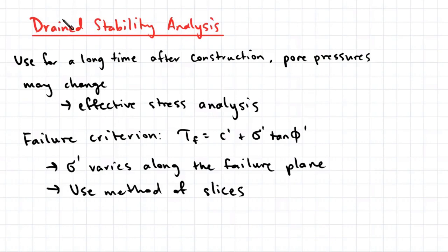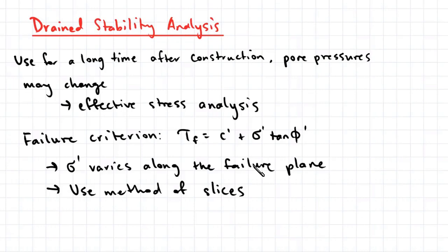Drained stability analysis is used when considering a long time after construction, meaning pore pressures in the soil have dissipated, and we use effective stress analysis. The failure criterion is tau_F equals c' plus normal stress sigma' times tan(phi'). The issue with effective stress analysis is that the normal stress varies along the failure plane, so we have to use a method of slices to effectively carry out our slope analysis. I'll talk more about method of slices in a subsequent video. Hope this helps guys.